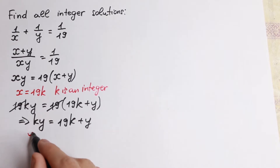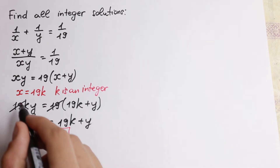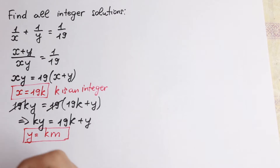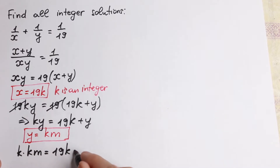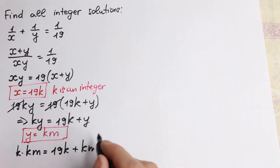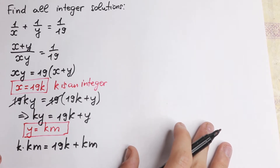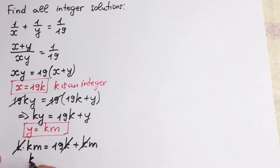Let's use a second substitution: let y equal to km. So we have y equal to km and x equal to 19k. If we plug in y equal to km, we will have k times km equal to 19k plus km. Let's cancel k, and as a result we'll have km equal to 19 plus m.